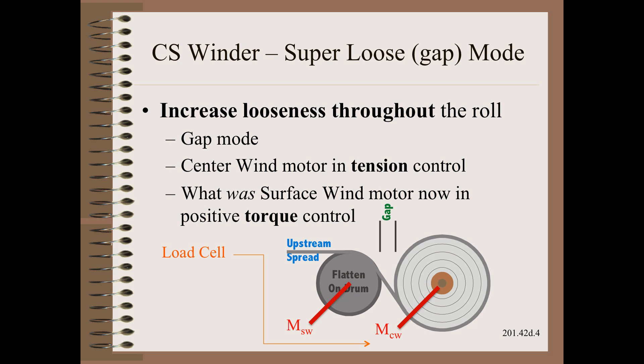The confusing thing about this mode is that any changes in the upstream load cell tension setting will directly affect the web and winding tightness in that span. This mode, however useful it may be, violates the best principle design drive guideline of not putting a motor or any other large source of torque between the load cell and the motor it talks to.